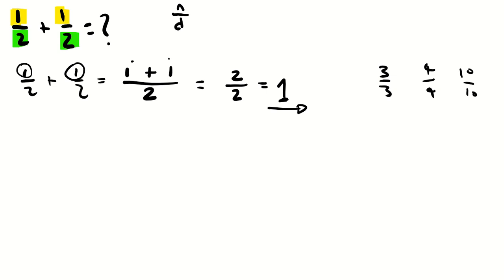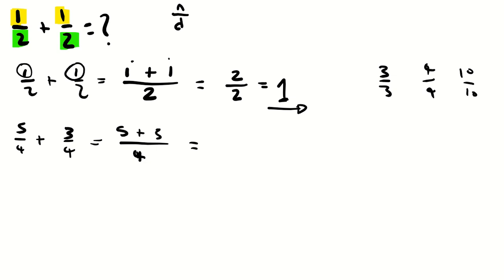Let's look at another example where the denominators are the same. Say you have 5 over 4 plus 3 over 4. Again, because the denominators are the same — you have a 4 and a 4 — just put a 4 here, and then add the numerators. We're going to add 5 and 3.